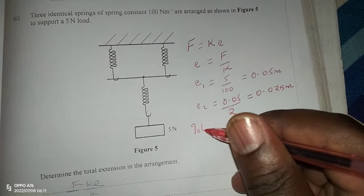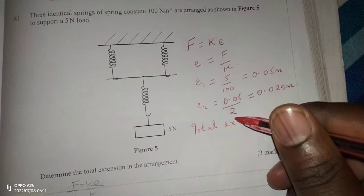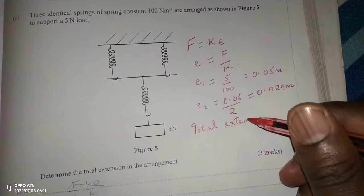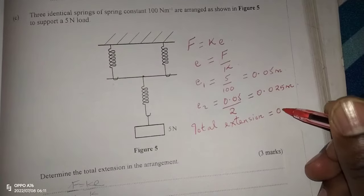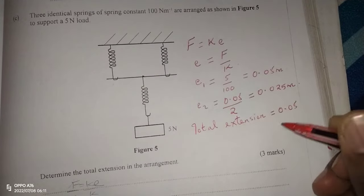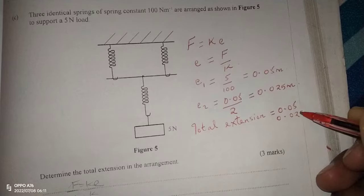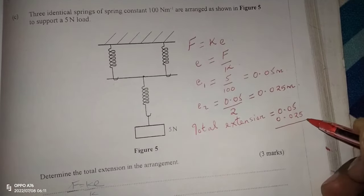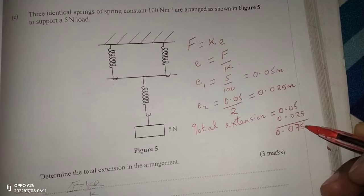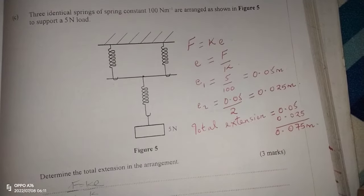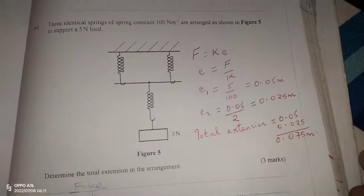Therefore, in each spring we will have 0.025 meters as the extension. We can now get the total extension, which is 0.05 plus 0.025, giving us 0.075 meters. That is the total extension in this system.